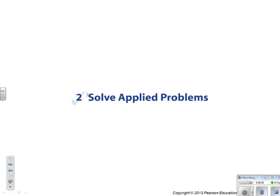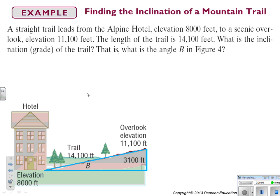All right, so let's look at the word problems. These ones are the most trickiest. So if I have a straight trail leads from Alpine Hotel, elevation 8,000, to Scenic Overlook, elevation 11,100, my recommendation is definitely draw the picture. The length of the trail is 14,100 feet. What is the inclination, this angle right here, or the grade of the trail? That is what is angle B in the figure.